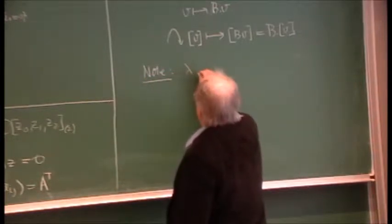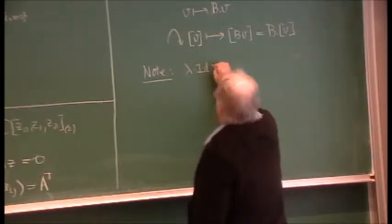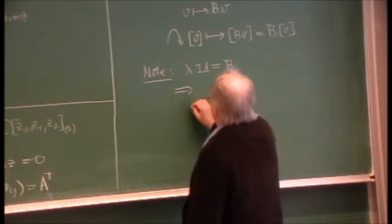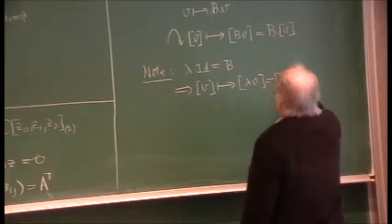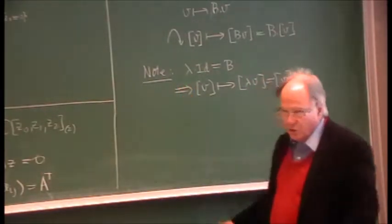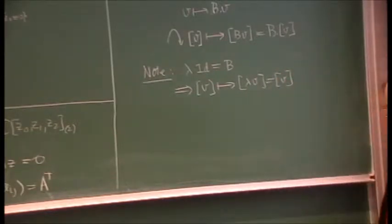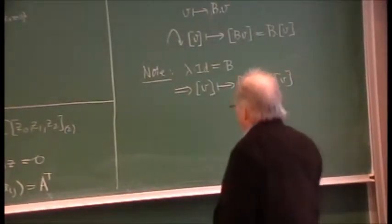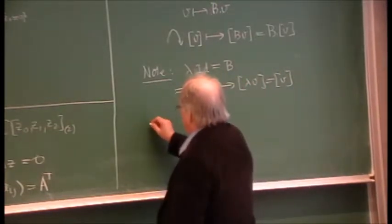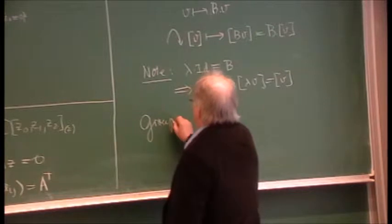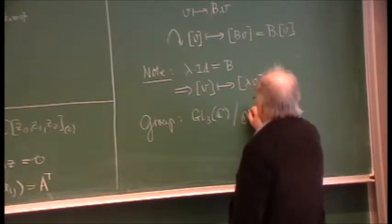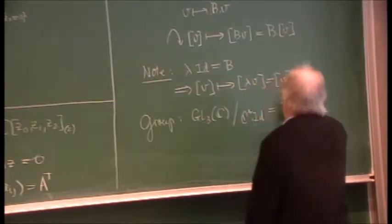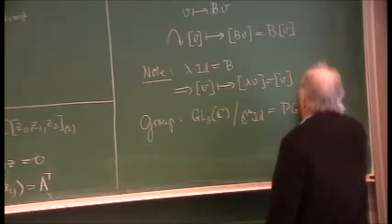Note that if you take a very special transformation — v goes to λv — it's the same thing as v. So there are transformations here which don't act, the scalars. The real group that is acting here is GL3(C) modulo scalar multiplication, and this group is called PGL3, where P means projective.